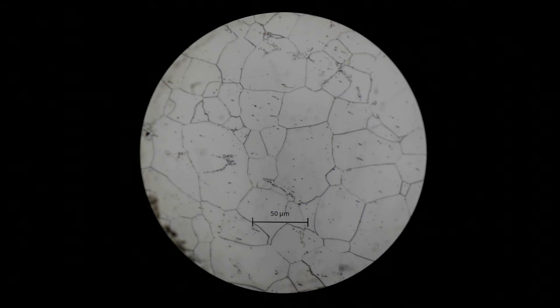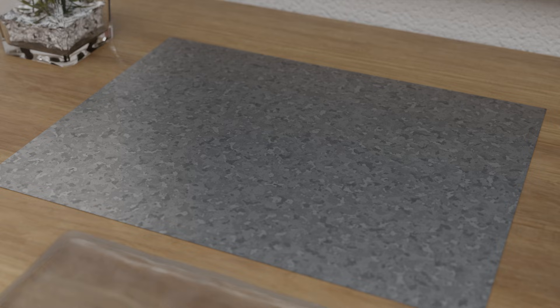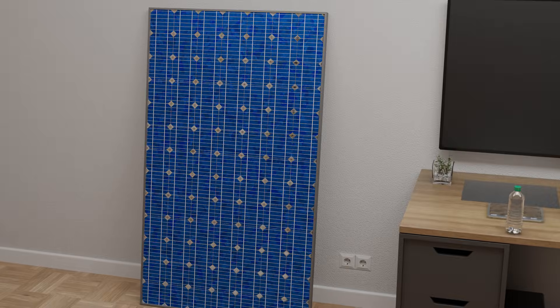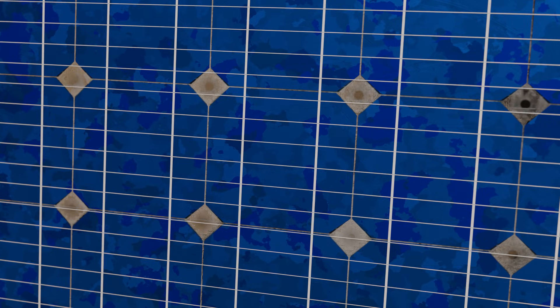In steel and most other metals, the grains are only a few micrometers in size and are therefore only visible under a microscope. In some cases, however, such as galvanized steel sheets, the individual grains can also be seen with the naked eye. The typical shimmering of the grains is caused by the different lattice orientation, which causes a slightly different reflection behavior in each case. The typical shimmering of the surface of polycrystalline silicon solar cells, whose grains are also visible to the naked eye, is created in the same way.